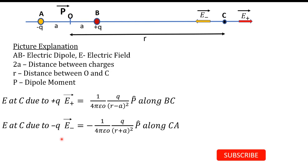The electric field at C due to minus q, E-minus, equals 1/(4πε₀) × q/(r+a)². We write (r+a)² because the distance AC equals OC plus OA, which gives r + a. The direction of this field is opposite to the dipole moment direction, so we write minus p-hat, and the direction of E-minus is along CA.